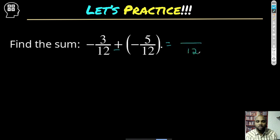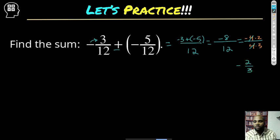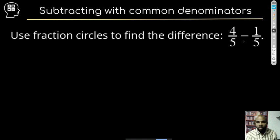What about this one? I can see we're adding with a common denominator of 12, so I write 12 on the bottom. This negative gets attached to the 3, and I add negative 5 — so I'm just adding integers here since 12 stays the same. Negative 3 plus negative 5 gives me negative 8. I can see both 8 and 12 are even, so I can reduce further: taking out a factor of 4 from both gives me negative 2 over 3.